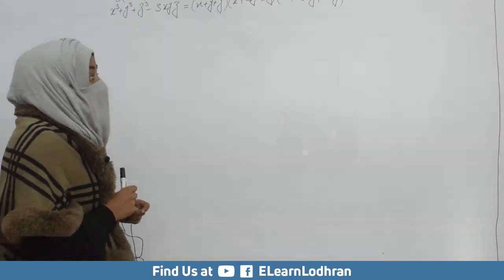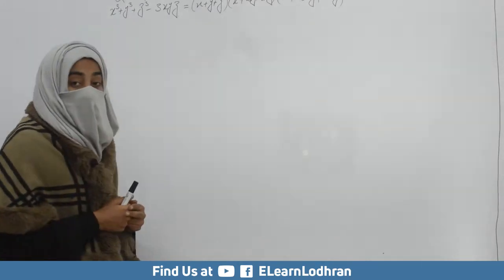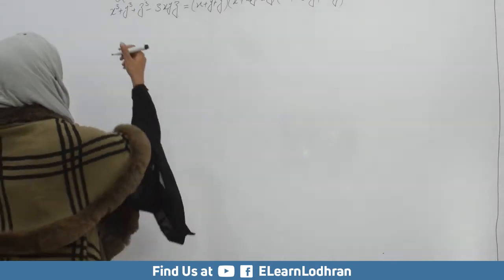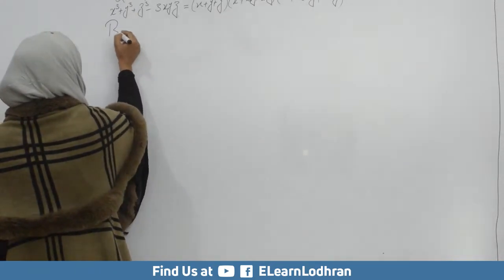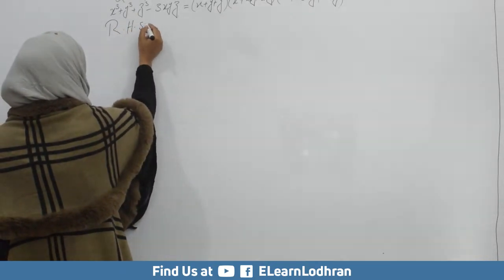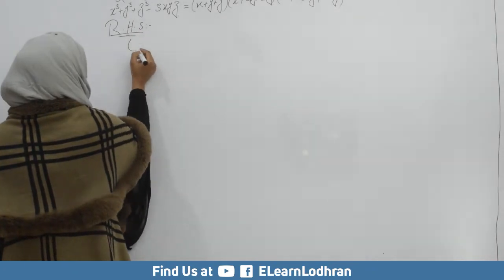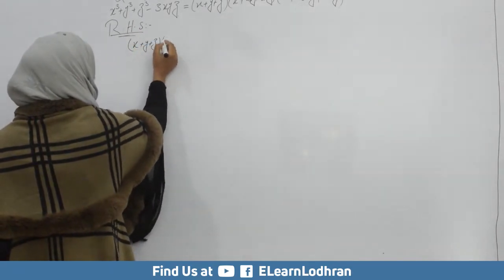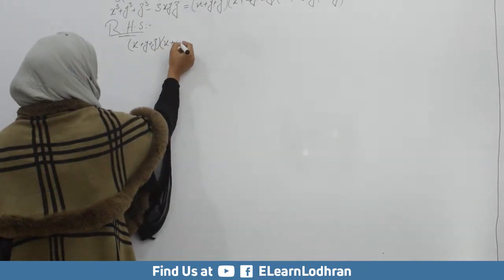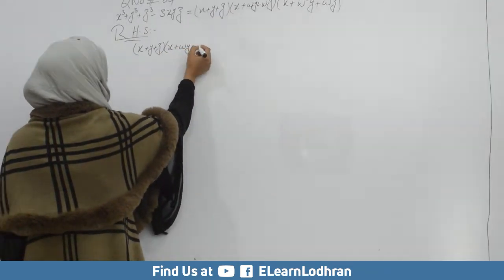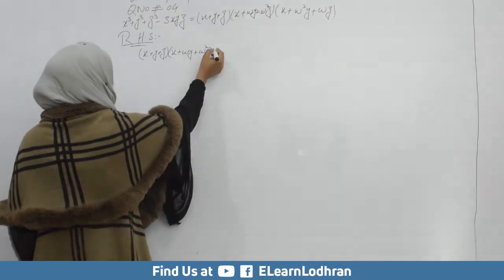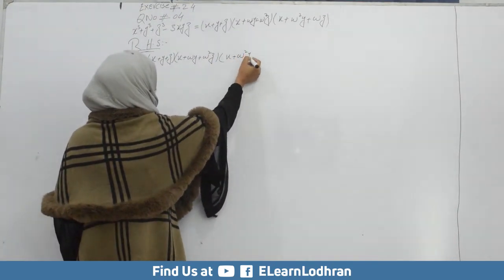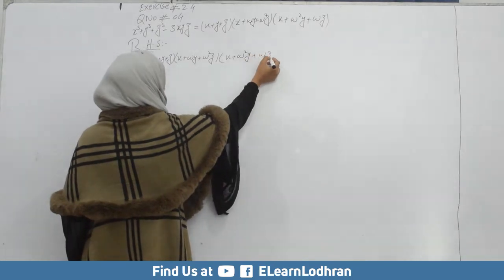Now, what do we have to do? We have to take the right-hand side and prove the left-hand side. So first of all, we take the right-hand side: x plus y plus z, into x plus omega y plus omega square z, into x plus omega square y plus omega z.